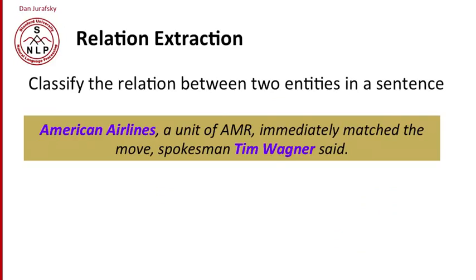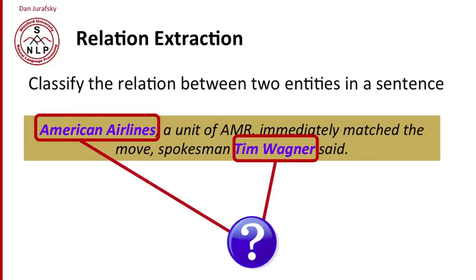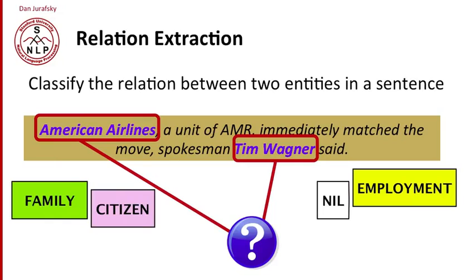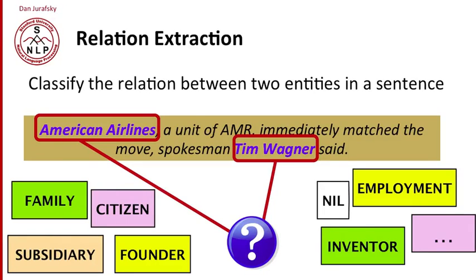Consider this sentence: "American Airlines, a unit of AMR, immediately matched the move, spokesman Tim Wagner said." We have two entities: American Airlines and Tim Wagner. Our task is to decide what the relationship is between those two entities. It might be family, or citizen, or employment, or it might be nothing — unrelated. Or it could be subsidiary, or founder, or inventor, and so on.